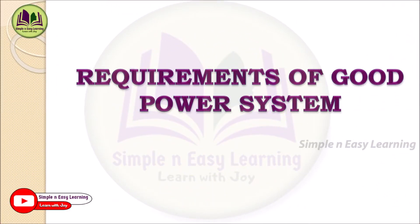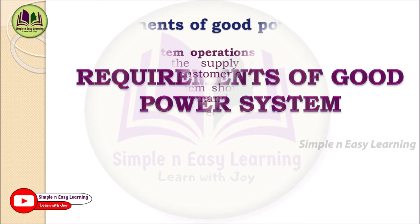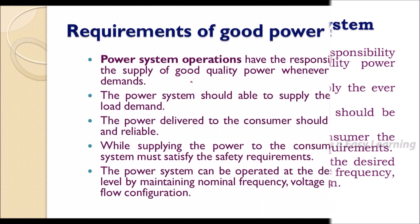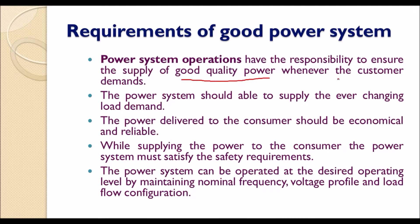We are going to study about power system operation and control. A good power system requires good quality of operation and control. The power system has the responsibility to ensure the supply of good quality power whenever the customer demands. Customers are free to use electricity at any time — switching on a fan or air conditioning — and they expect to receive good quality power.